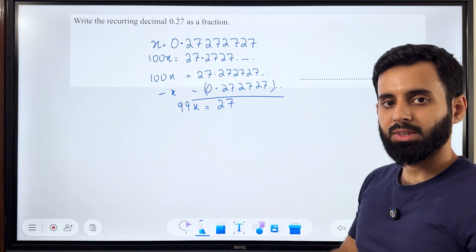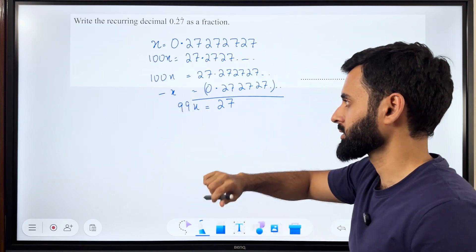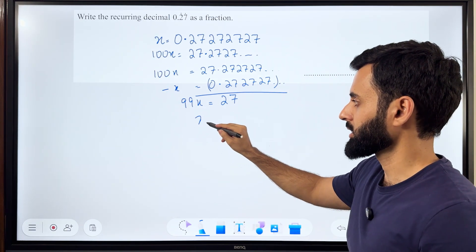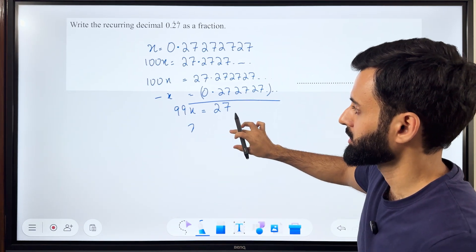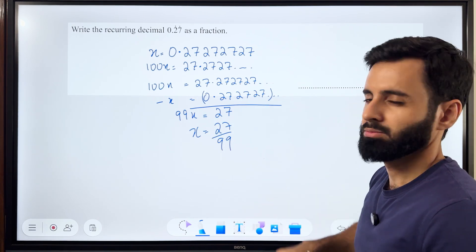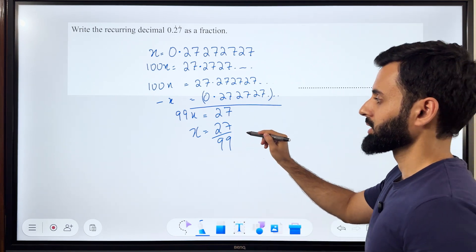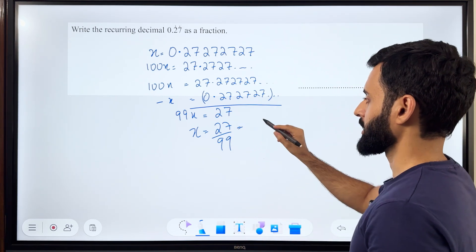Remember, you just want the fraction value of this decimal which is equal to x. Now all you got to do is make x the subject. Oops, that was not supposed to happen. So x equals 27 over 99. Now is this as simplified as it can get? Of course not.